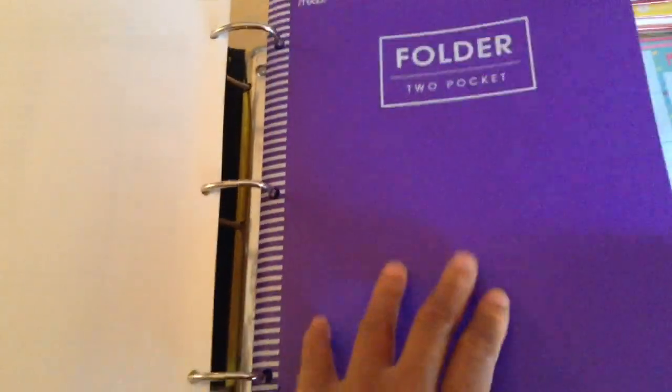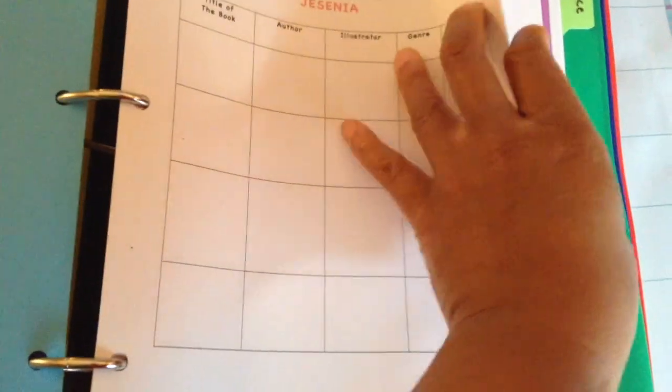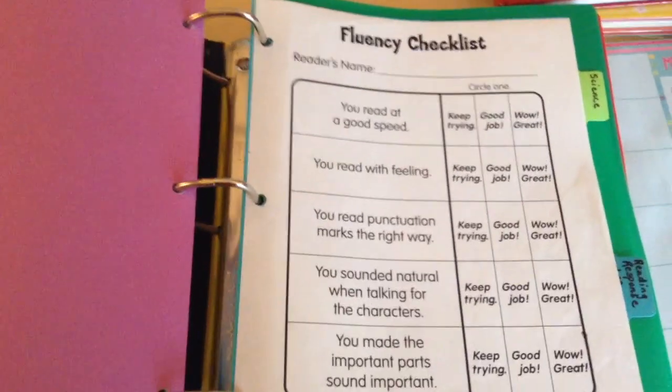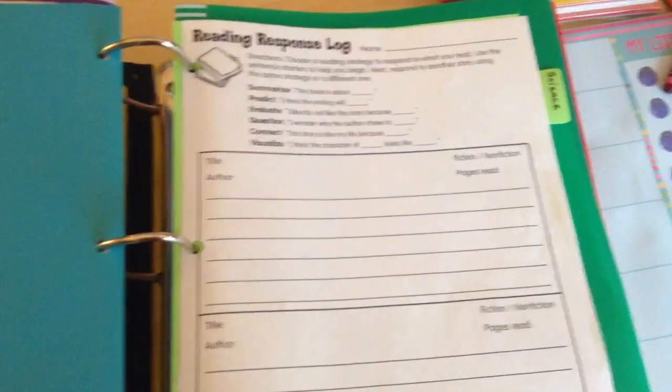This folder here I got from Target — it's to store any lists or anything we go over, for them to keep in here. Over here I have reading logs that I created and printed out. Each child has their own personal set. Then we have the fluency checklist for reading, printed from lakeshorelearning.com, which has multiple resources. This is also from lakeshorelearning.com — the reading response log.